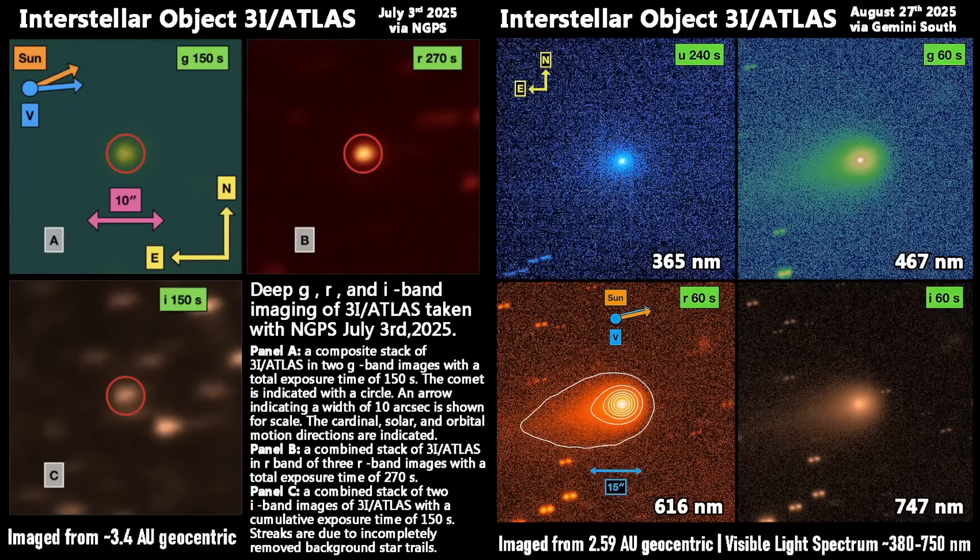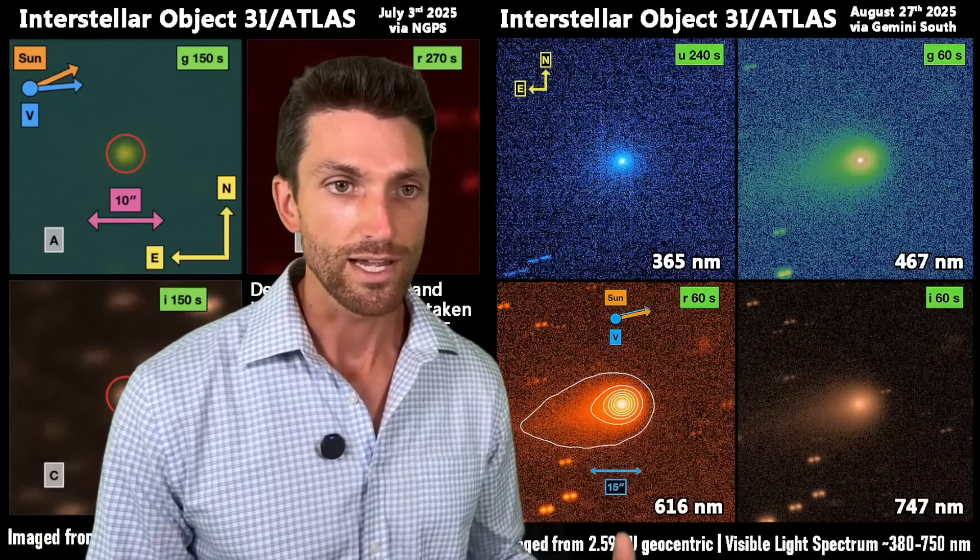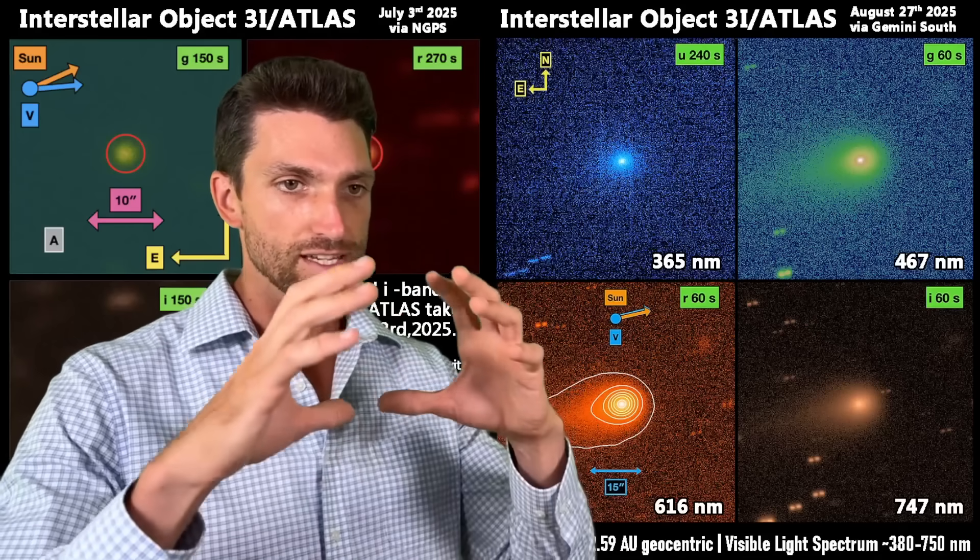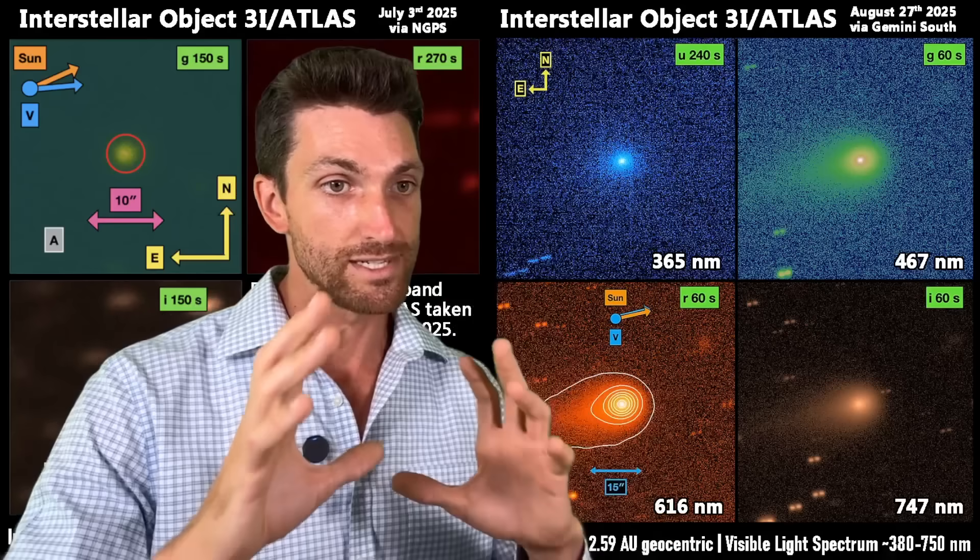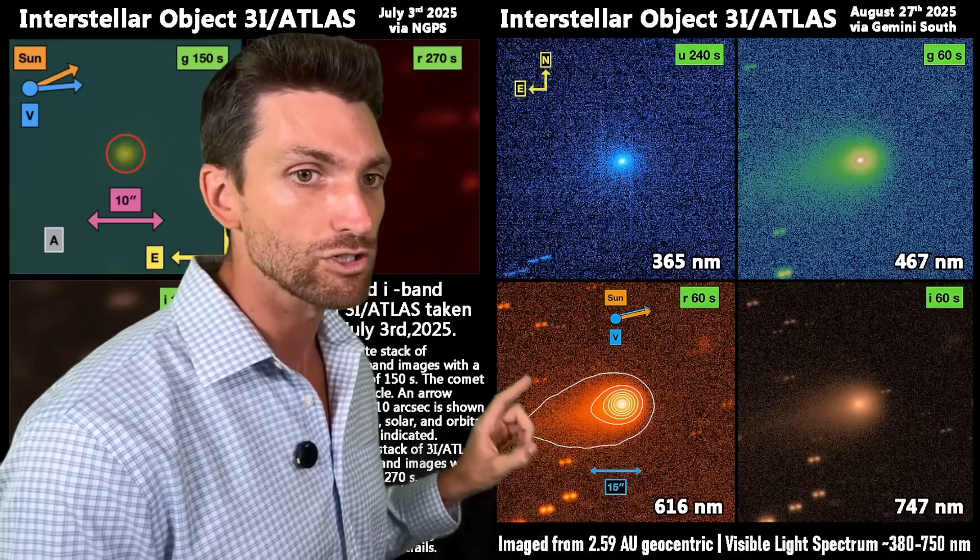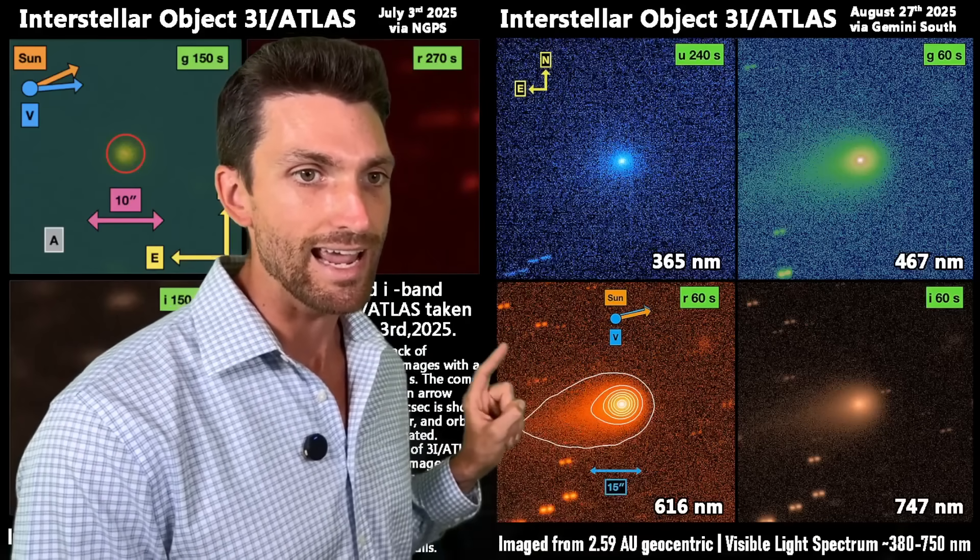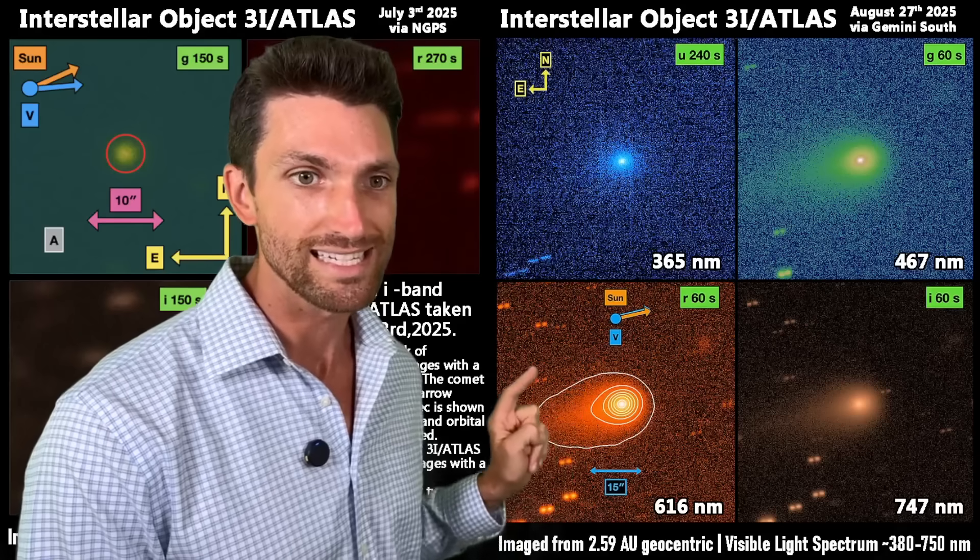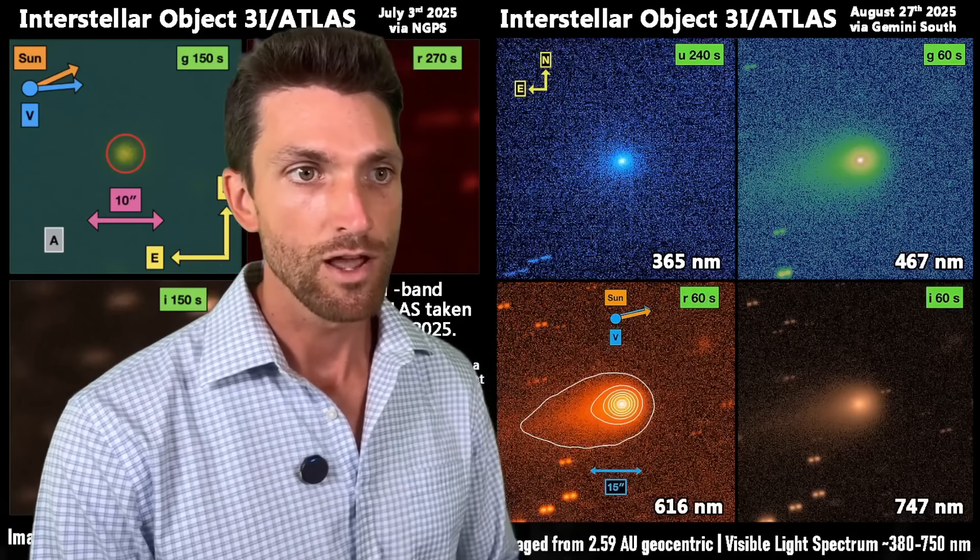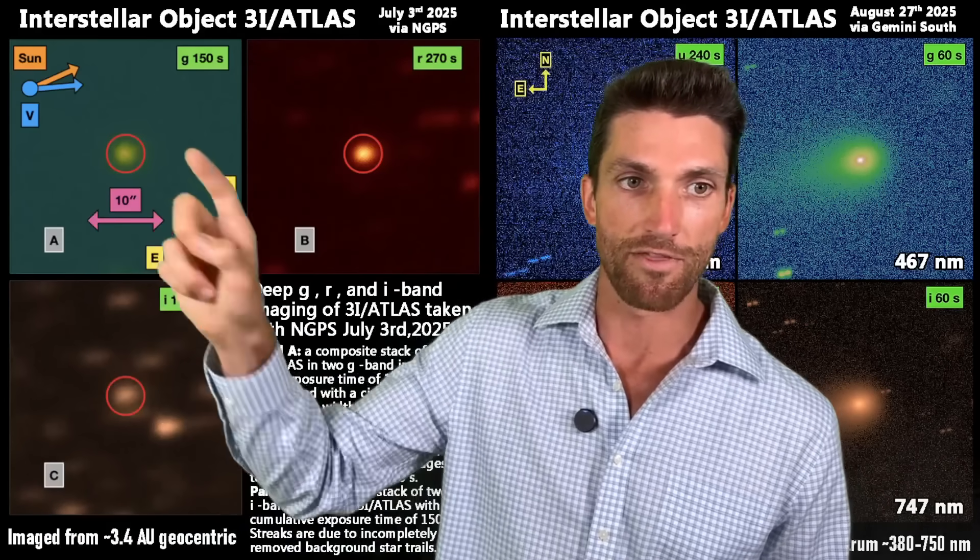Can you see the difference now in these images? There is some changes in the scale as we can tell, but what you'll notice is that three-eye atlas went from this kind of round, diffuse, dimmer object to now clearly having a anti-sunward tail. Because here is our sunward direction. We also see this plotted up there.